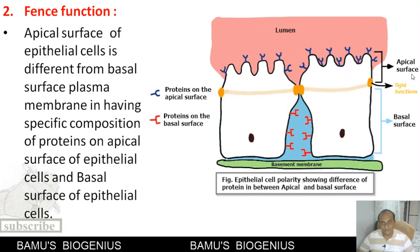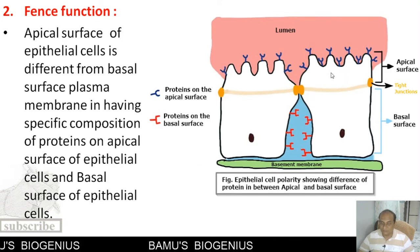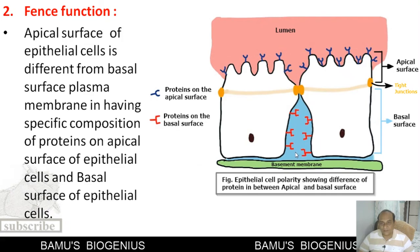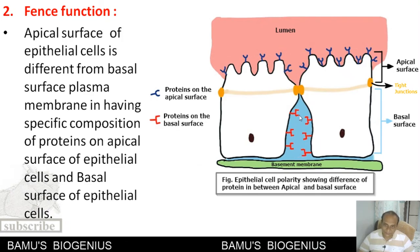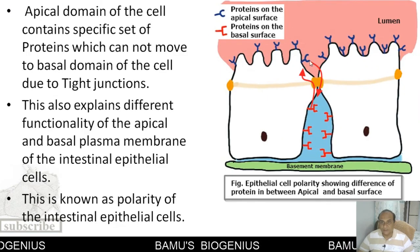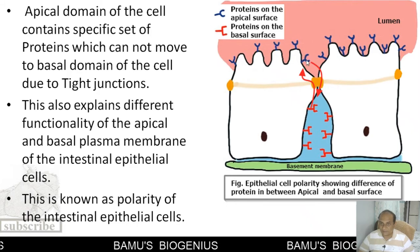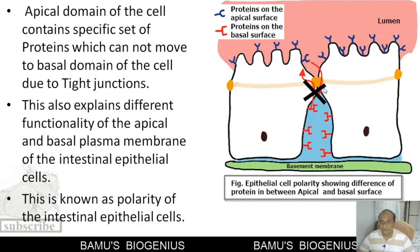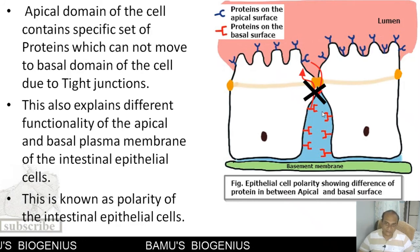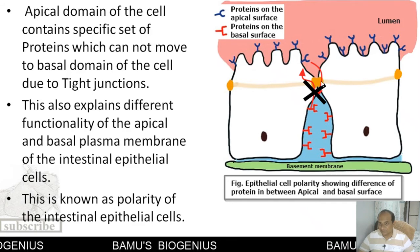We know that the apical surface has a specific set of proteins which are responsible for a specific function. Similarly, the basolateral surface plasma membrane also has a specific set of proteins meant for a specific purpose. The movement of these particular proteins from the apical surface to the basal surface is prevented, and from the basal surface these proteins cannot move to the apical surface. So a functional polarity is maintained in the epithelial cells of the intestine by tight junctions — this is known as the fencing function of the tight junction.